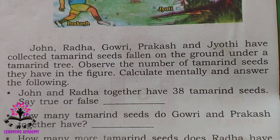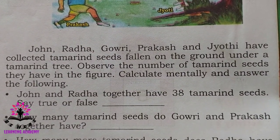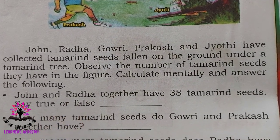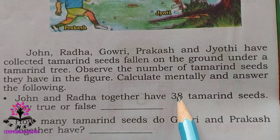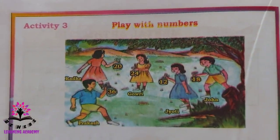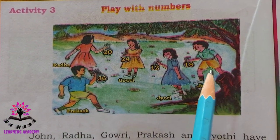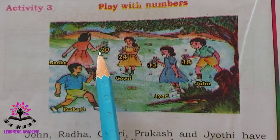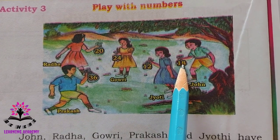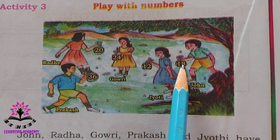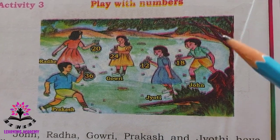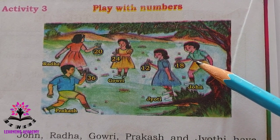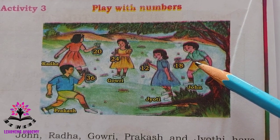The first question: John and Radha together have 38 tamarind seeds — say true or false. John has 18 and Radha has 20, so we need to calculate 20 plus 18 mentally and tell me whether the total is 38. If the total is 38 it is true, otherwise it is false.